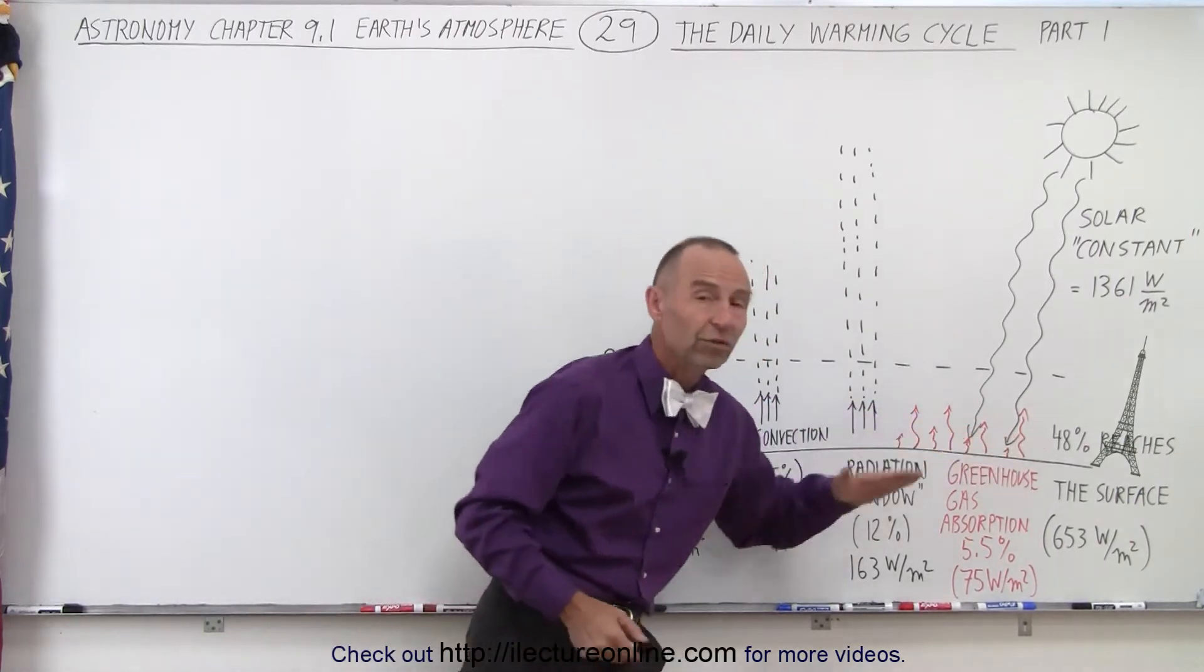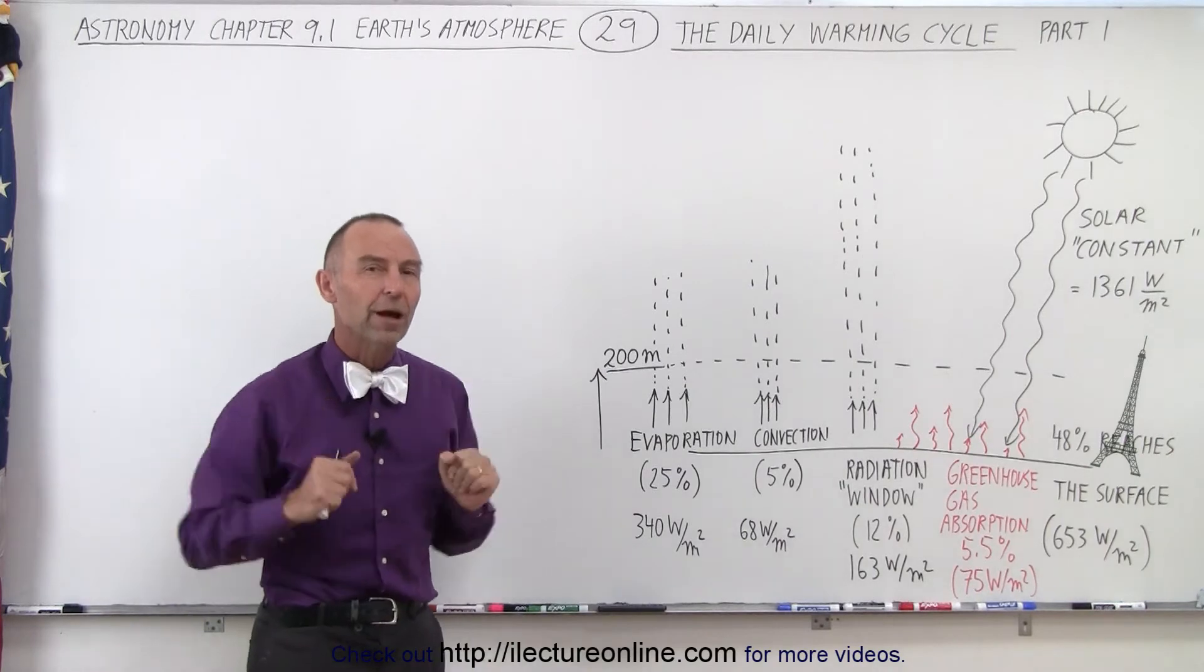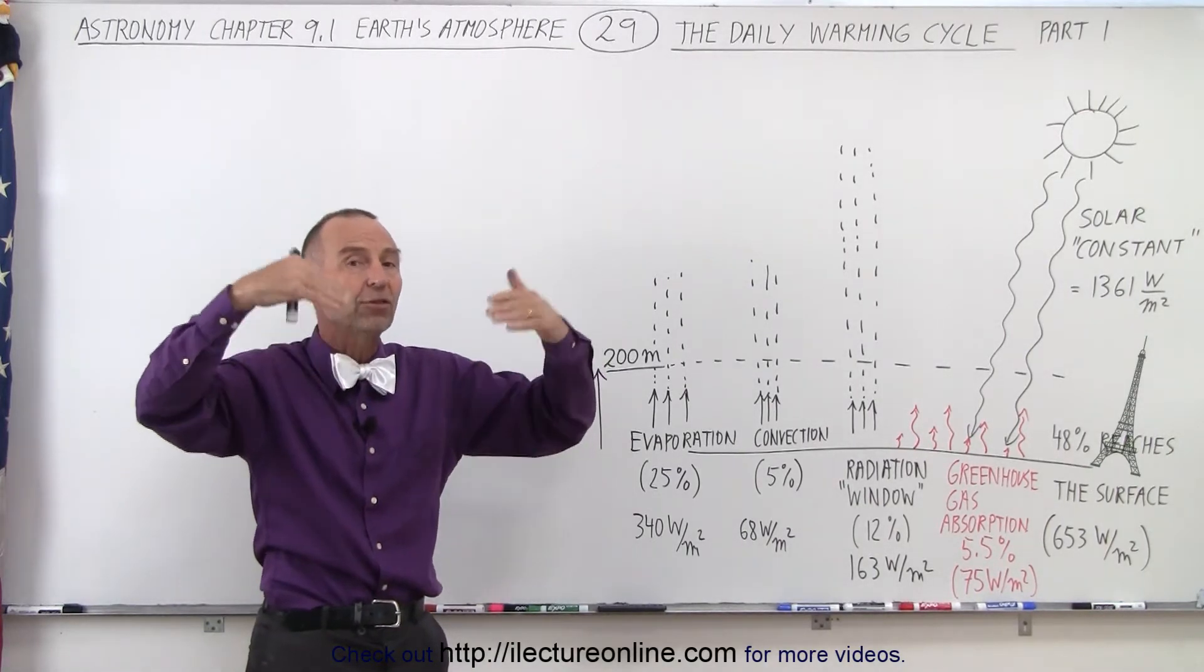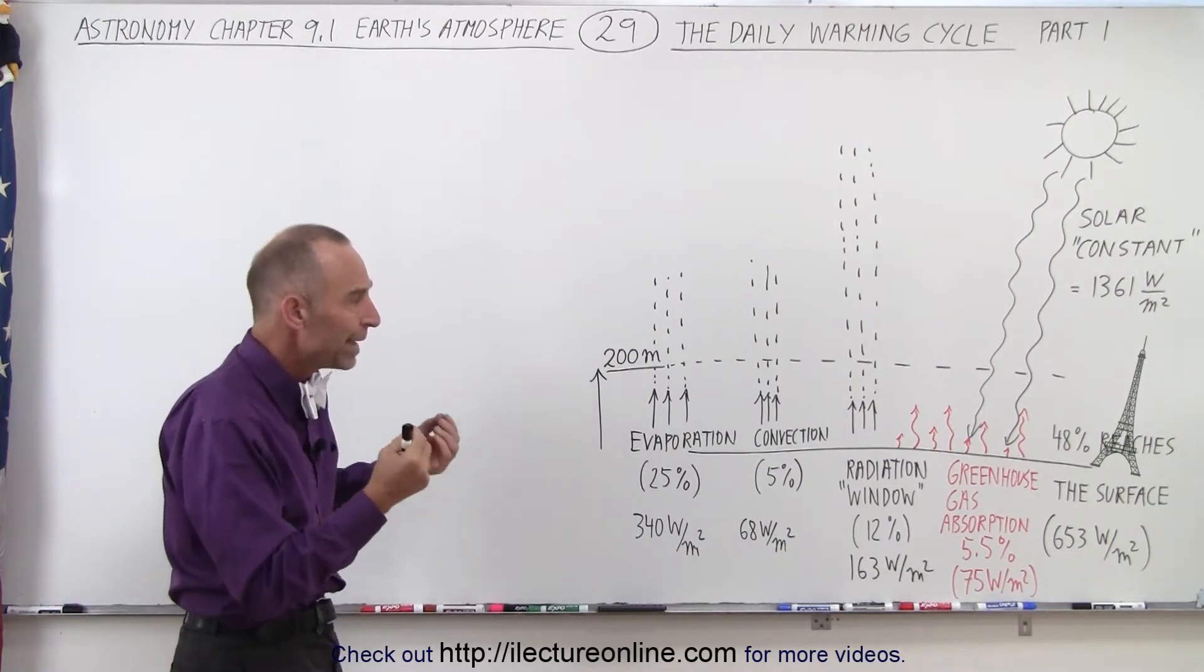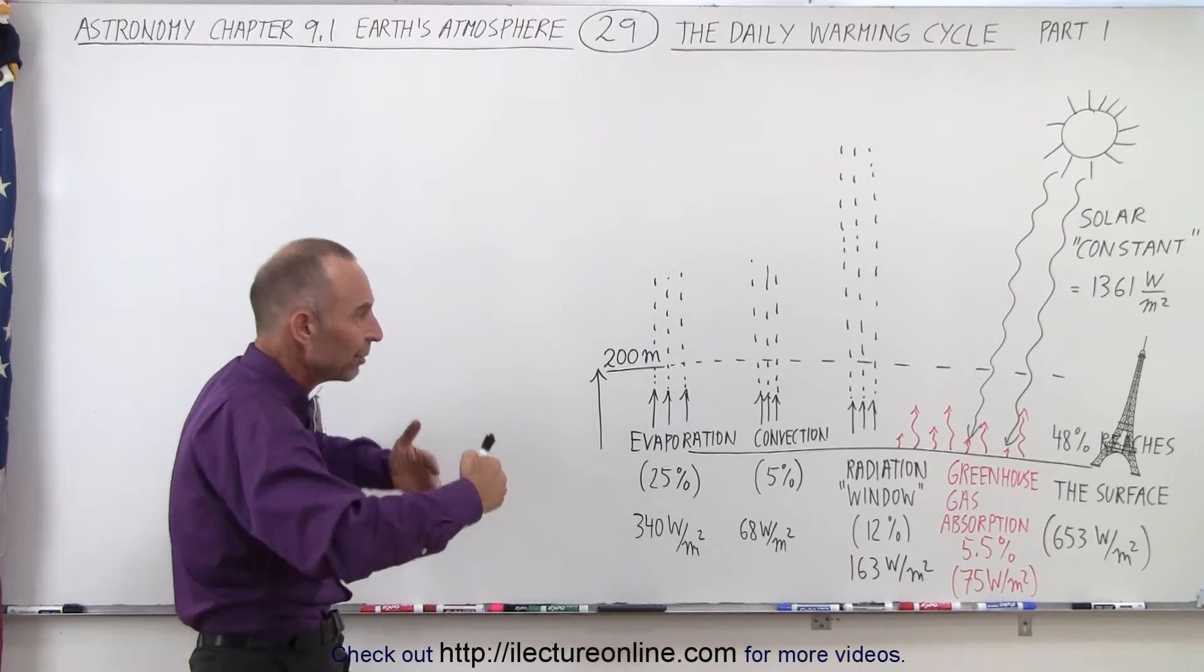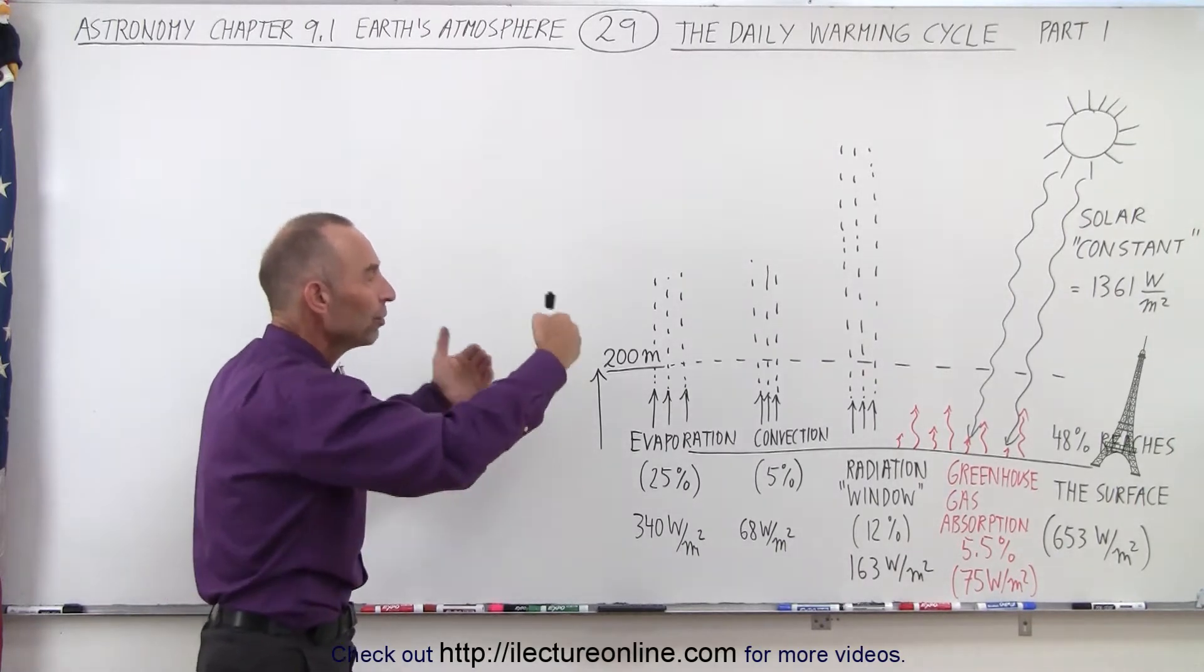48% of that reaches the Earth's surface and warms it up. And then that heat gets re-put into the atmosphere, into space in various ways. There are four main ways in which the heat that was absorbed by the surface makes it either back into space or goes into the atmosphere.